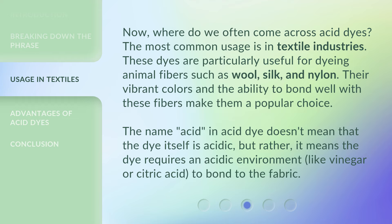Where do we often come across acid dyes? The most common usage is in textile industries. These dyes are particularly useful for dyeing animal fibers such as wool, silk, and nylon. Their vibrant colors and ability to bond well with these fibers make them a popular choice. The name 'acid' in acid dye doesn't mean the dye itself is acidic, but rather that it requires an acidic environment, like vinegar or citric acid, to bond to the fabric.